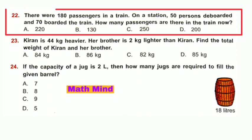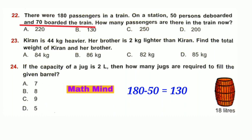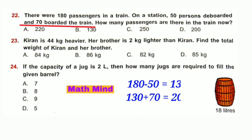Question number 22: There were 180 passengers in a train. At a station, 50 passengers deboarded and 70 boarded the train. How many passengers are there now? 180 − 50 = 130 remaining. Then 130 + 70 = 200 total passengers. Option D is correct.